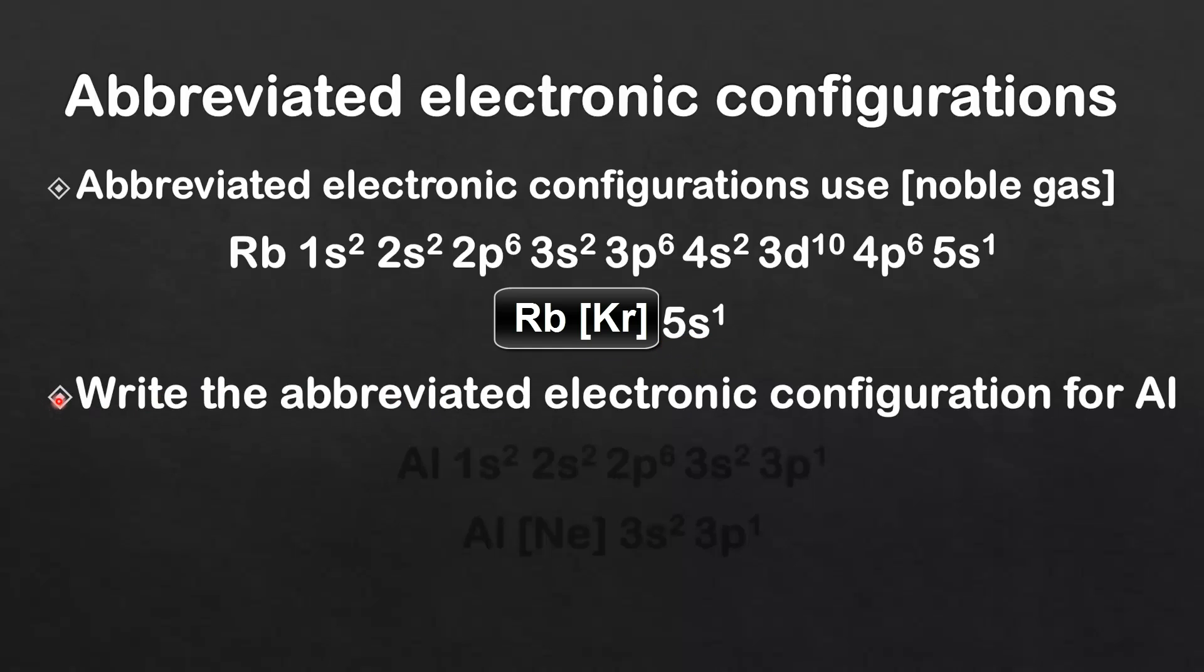So let's look at another example. Write the abbreviated electronic configuration for aluminium. So here's the full electronic configuration: 1s2, 2s2, 2p6, 3s2, 3p1. And the noble gas we're going to use is neon. That takes care of 1s2, 2s2, 2p6. And what's left over is 3s2, 3p1.